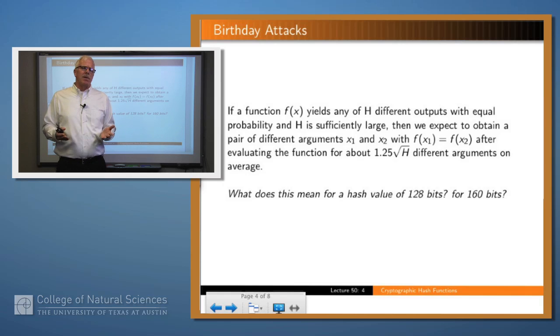All right, so it seems like, well, we ought to be able to find these collisions. Well, there's something called the birthday paradox, or the birthday attack. You may have heard of this, if you've got 50 people in a room, it's almost certain that there's going to be two people with the same birthday. And why is that? Because you've got a finite number of birthdays, and the individuals are all hashing to that finite set.